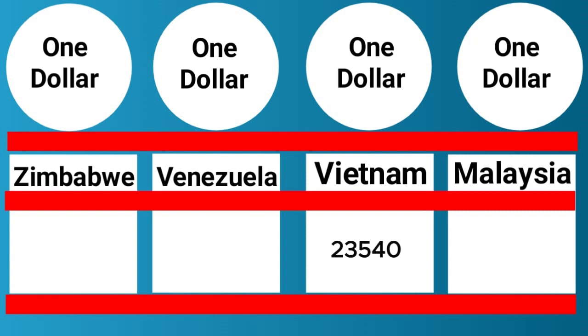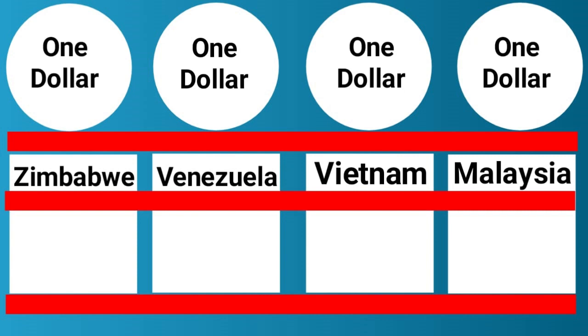1 US Dollar is equal to 23,540 Vietnamese Dong, and 1 US Dollar is equal to 4.6 Malaysian Ringgit. Thanks for watching.